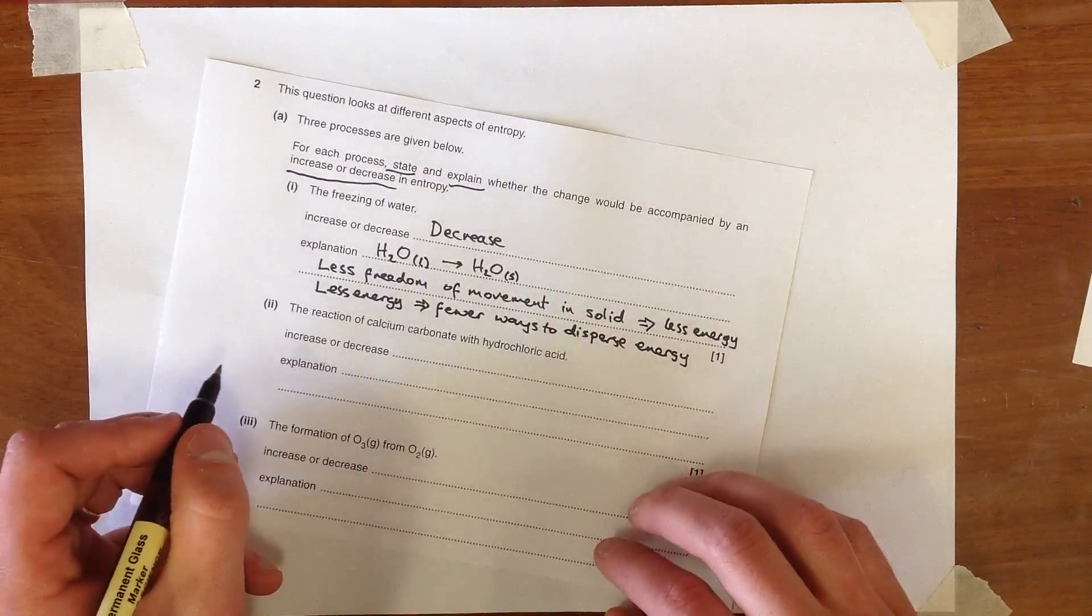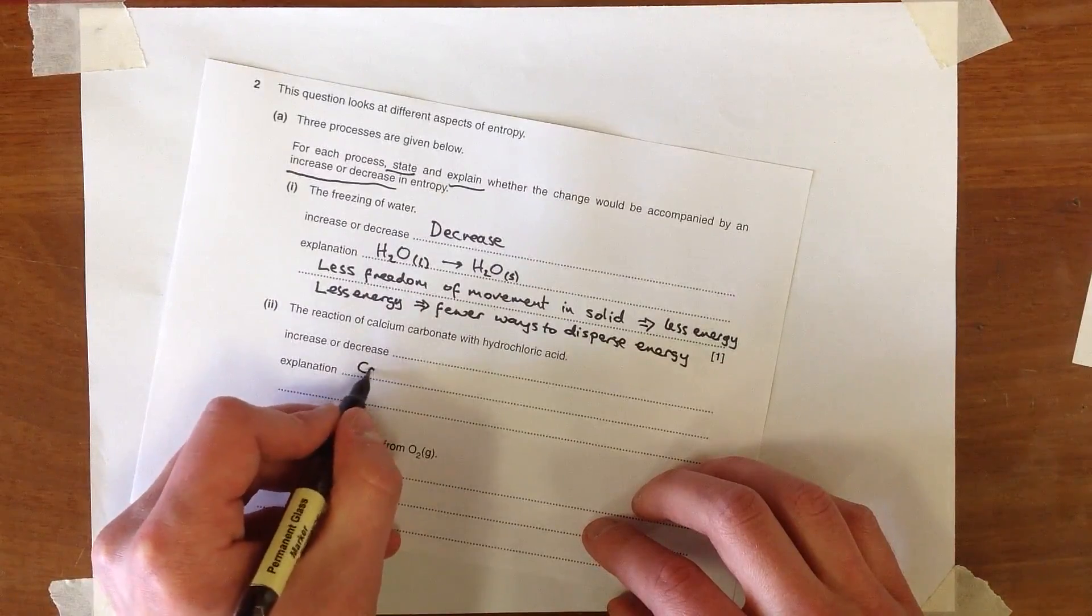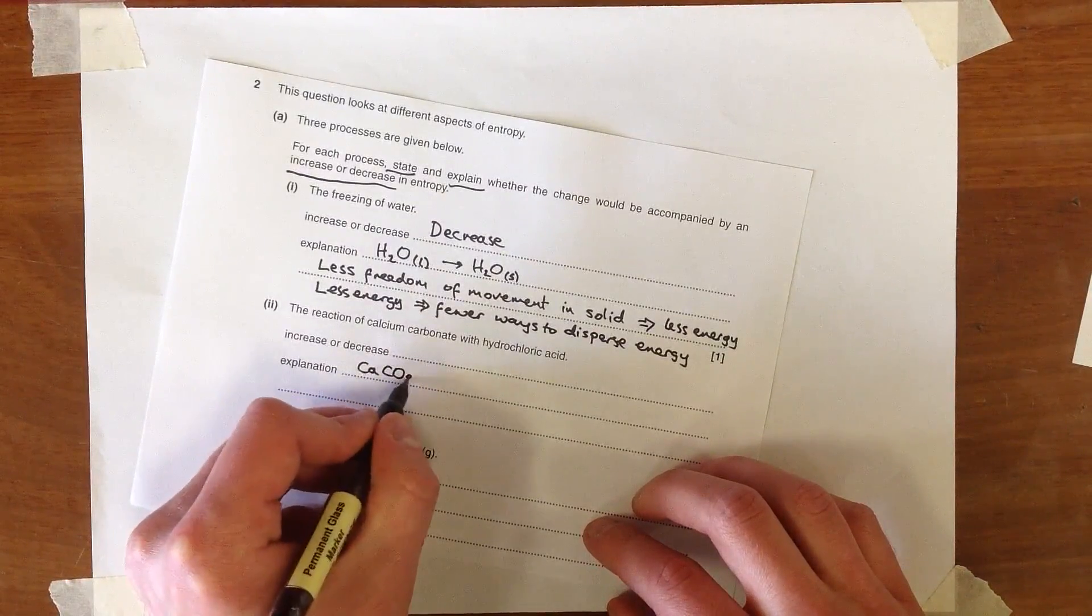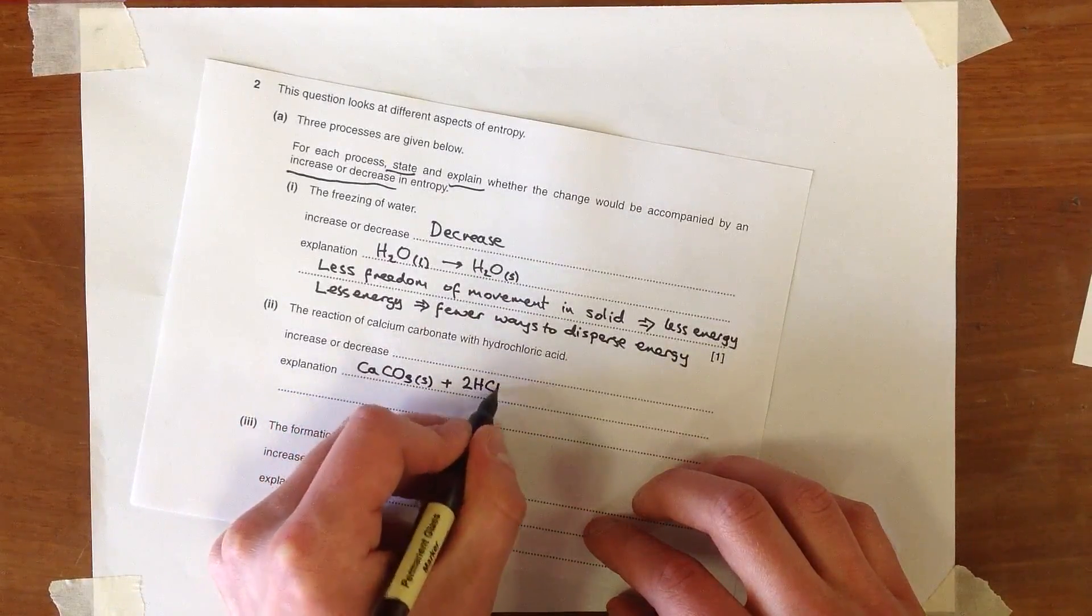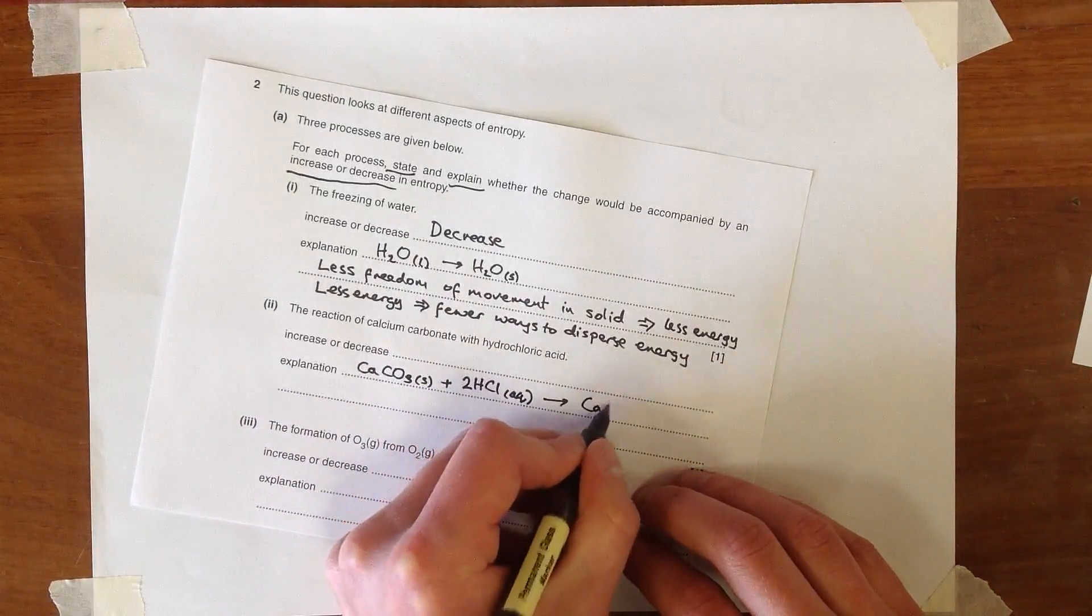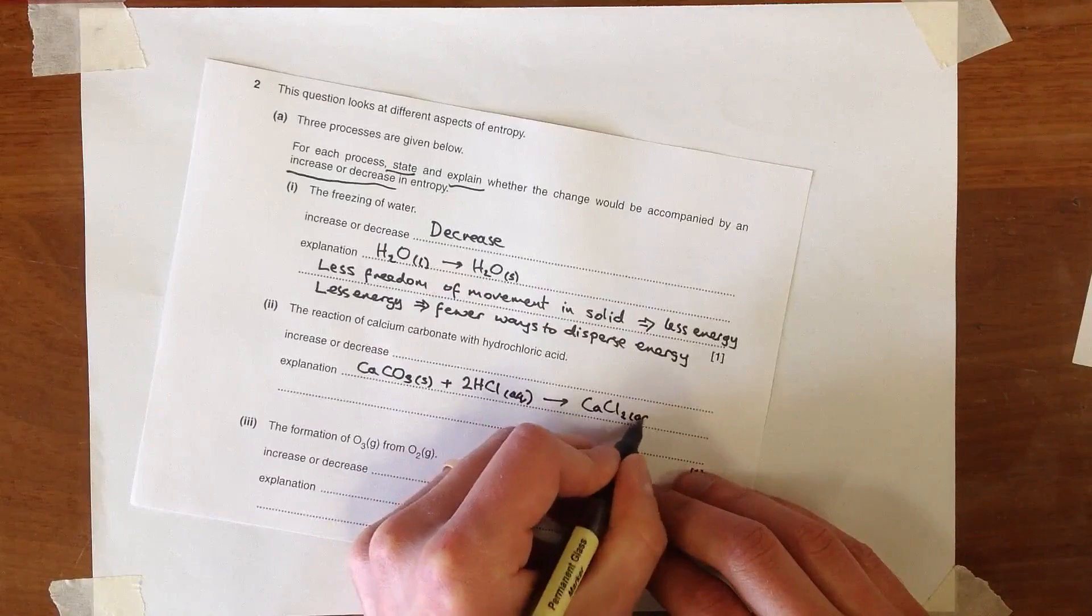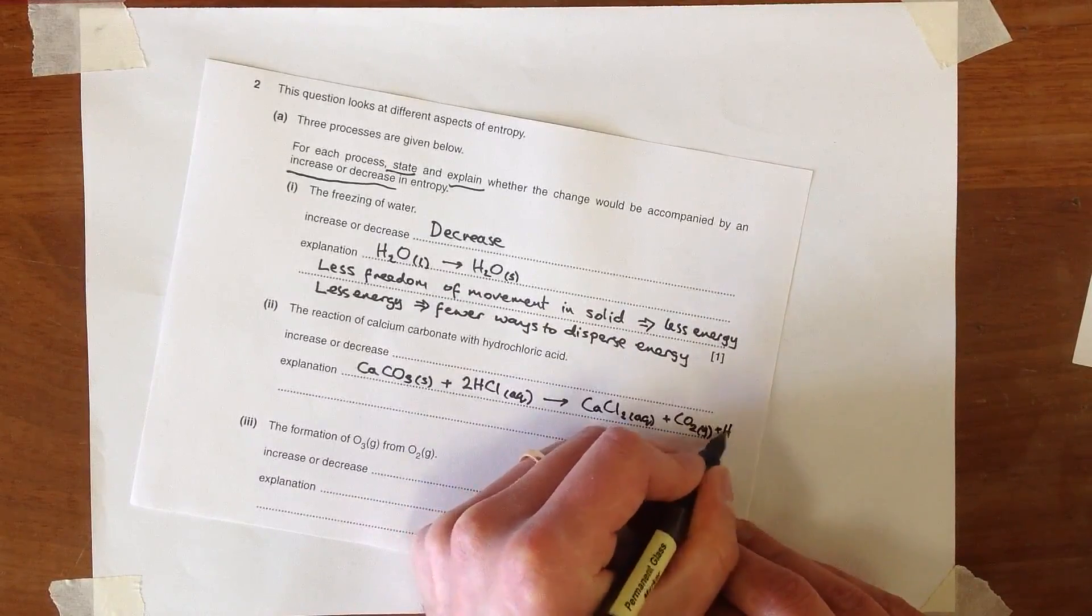And the next is the reaction between calcium carbonate and hydrochloric acid. Again, a good idea to start with an equation. So calcium carbonate, which is a solid, always good to put state symbols in for these entropy questions, really essential. It's reacting with hydrochloric acid. It's going to form calcium chloride, carbon dioxide, and water.